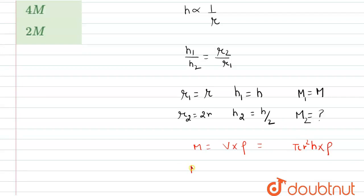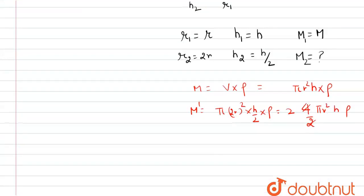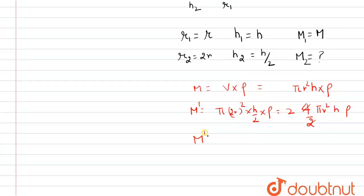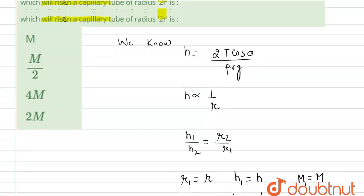Now for m dash, it will become pi times radius 2r squared times height h upon 2, and rho will remain same. So here we get 4 pi r square h upon 2 times rho. So 2 will cancel out. Hence our new mass m dash equals 2 times m. So our new mass is 2m.